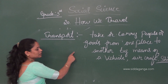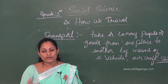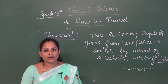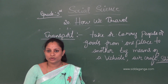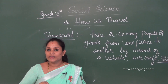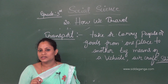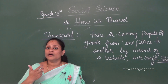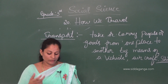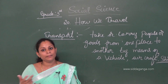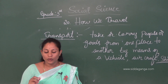Different means of transport carry people and goods from one place to another. We cannot use the same type of vehicle to go to all places. Sometimes we use bicycles and scooters, and sometimes buses or aeroplanes.